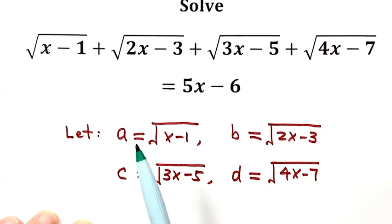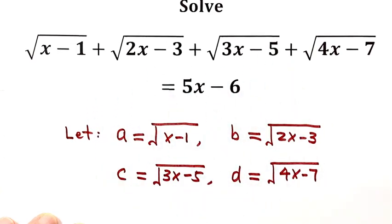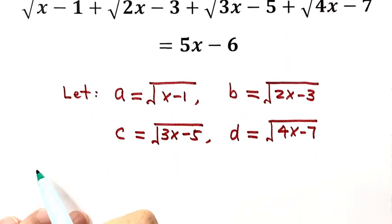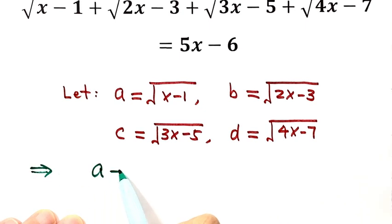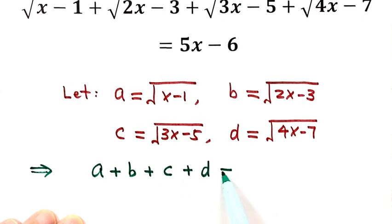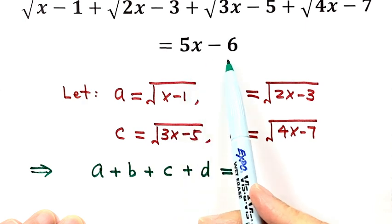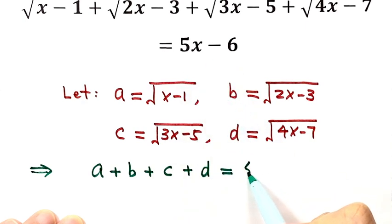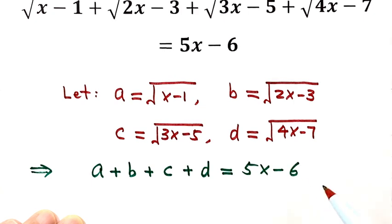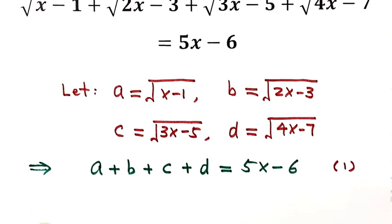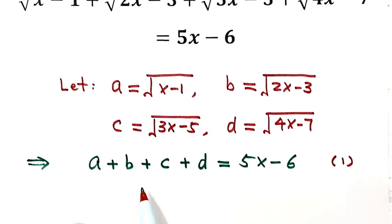So now the original equation becomes: a plus b plus c plus d equals 5x minus 6. Let's label this as equation 1. We now have a problem: the left-hand side has a, b, c, d, but the right-hand side still has x. So let's see how to deal with this x.